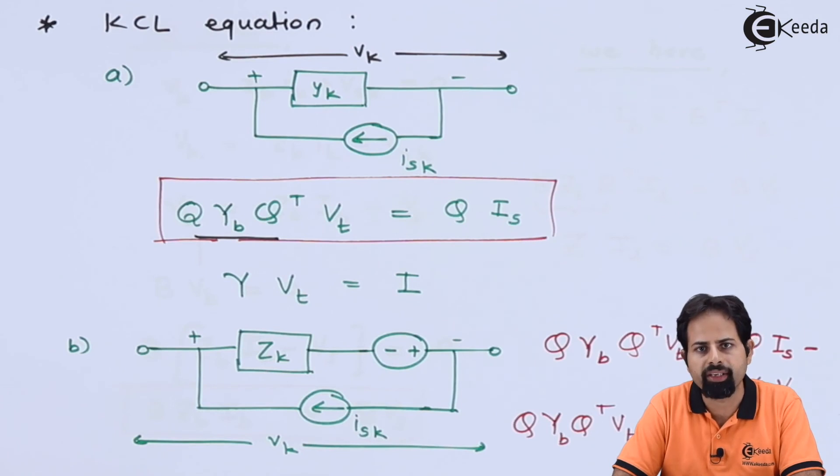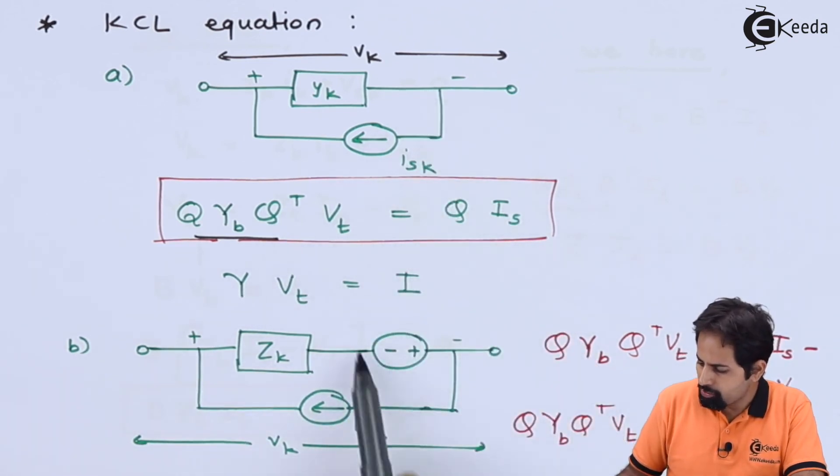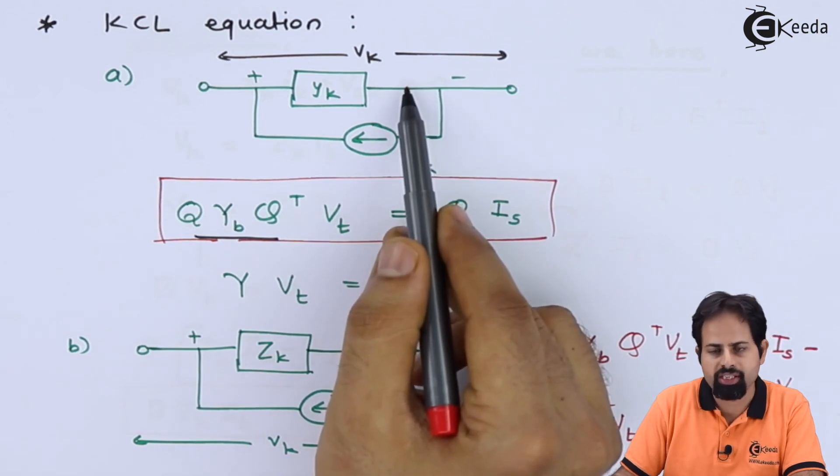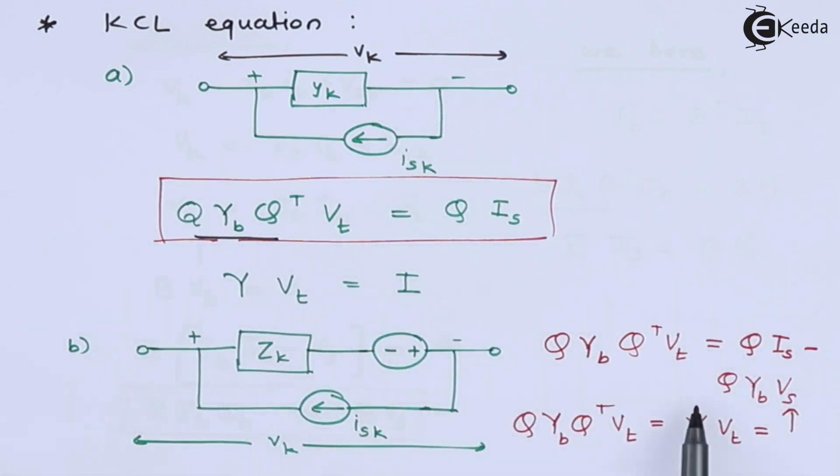Now what is Q? Q is cut set matrix. In previous KVL case, we used tie set matrix that was capital B. And here, see here there is one more voltage source. Here there is no voltage source in series. So here our formula is simpler. Here little bit complicated. So we have to just remember this formula for solving the numericals.